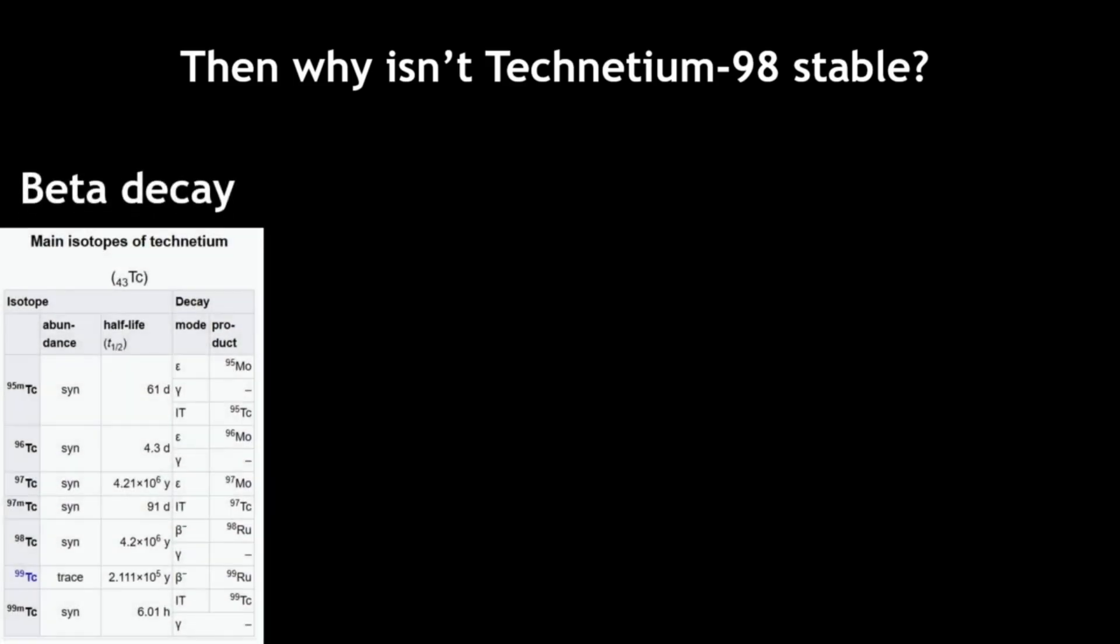However, it is prone to beta decay, meaning that all isotopes of technetium with a mass below 98 primarily decay into molybdenum, while isotopes with a mass of 98 and above primarily decay into ruthenium.